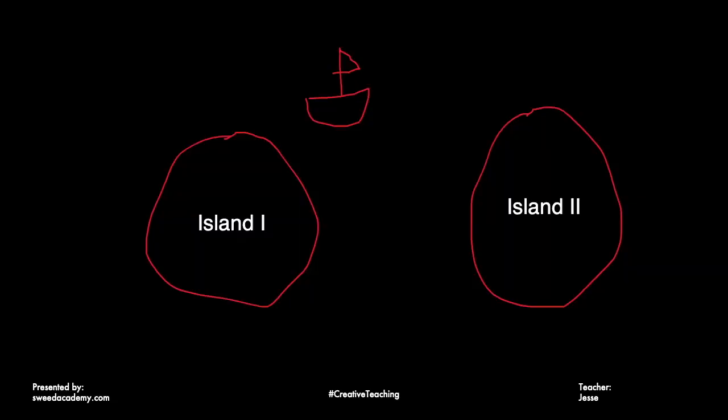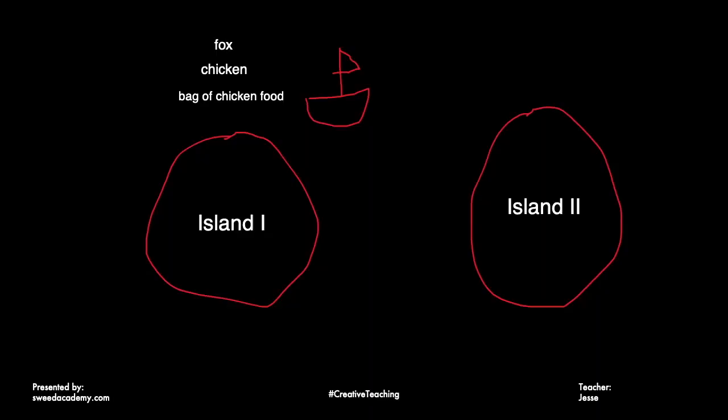By this time, some students will think they already know the riddle, but they won't really remember it — don't let that distract you. Just let them say that and think that, and tell them to relax. Then I write — or draw if you can draw, I can't — a fox, a chicken, and a bag of chicken food on island one. This is also a place to teach the difference between chicken food and chicken as food, because a lot of students will think it's fried chicken. That's an important distinction in this riddle.